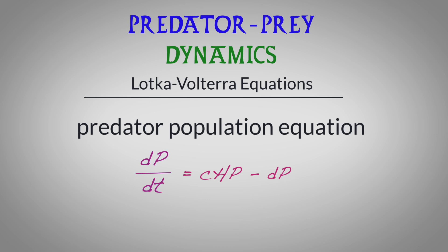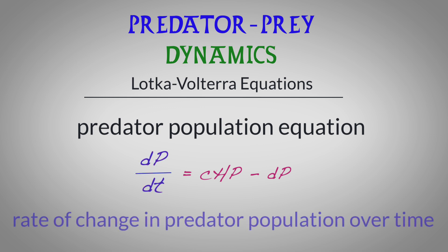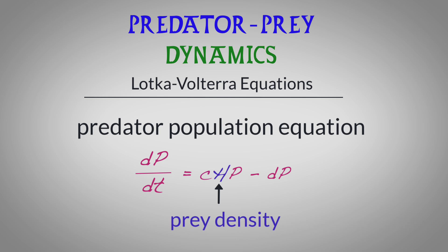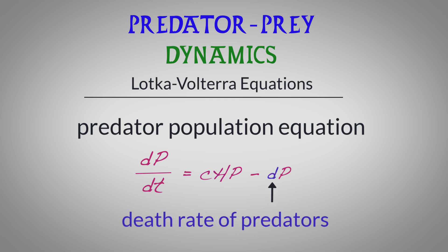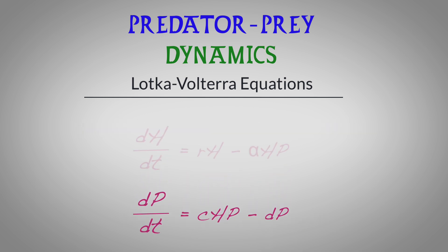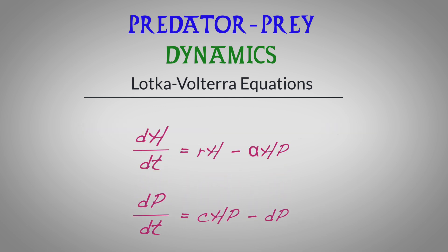Here, dP/dt represents the rate of change in the predator population over time. So the change in predator population over time is determined by their ability to convert prey into new predators, multiplied by prey density and predator density, minus the death rate of predators multiplied by predator density. When these two equations are graphed together over time, they can look something like this.